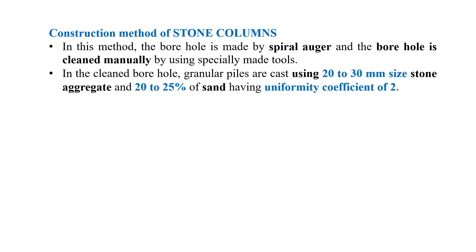Once the hole is made and cleaned, gravel wall piles are cast using 20-30 mm size stone aggregate along with 20-25% of sand having a uniformity coefficient of 2. For coarse-grained soil, whenever we draw the particle size distribution curve, we can determine the coefficient of uniformity, which is equal to D60 divided by D10.